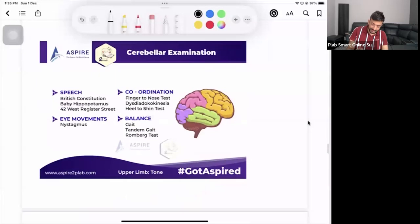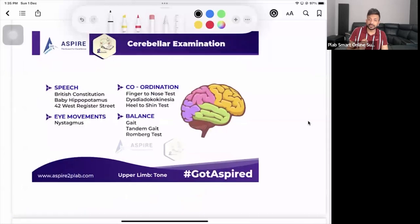Then what you do after taking history? You have to do the examinations. In a cerebellar examination, what are the things that you check? We check for speech. Usually we go for these three words, British constitution, baby hippopotamus, 42 West Register street.